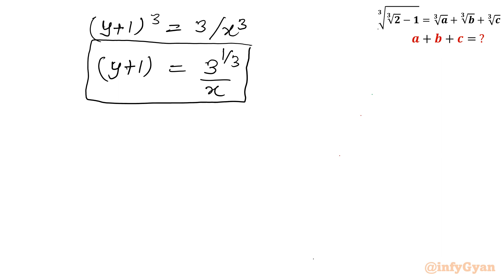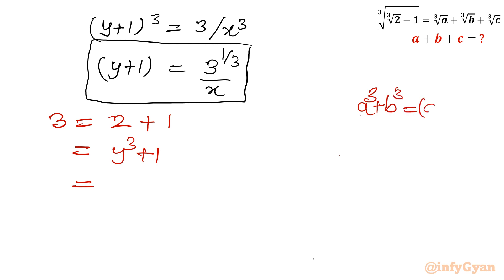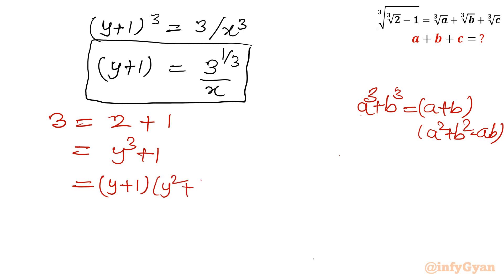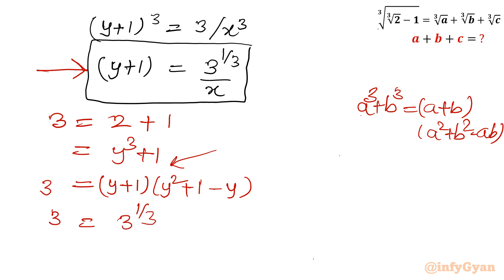Now the second algebraic manipulation: I write 3 equals 2 plus 1. Since 2 equals y cubed, I apply a³ plus b³ equals (a plus b)(a² minus ab plus b²), giving 3 equals (y plus 1)(y² minus y plus 1). We already calculated y plus 1, so substituting: 3 equals (3^(1/3) over x) times (y² minus y plus 1).